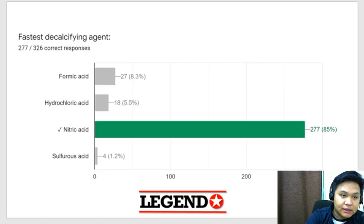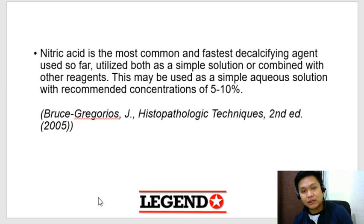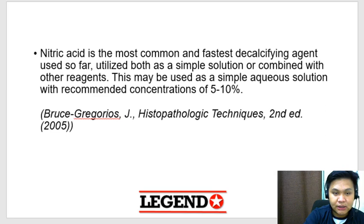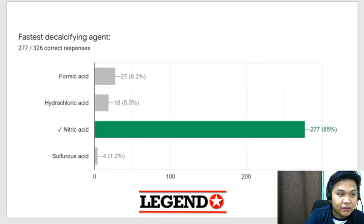Fastest decalcifying agent — the answer would be nitric acid. Karamihan tama naman dito. Nitric acid is the most common as well as the fastest decalcifying agent, commonly used at a concentration of 5 to 10%. Its disadvantages include rapid tissue swelling, tissue distortion, damaged tissue antigens, and loss of enzymes.